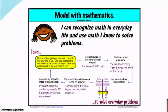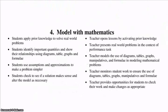Number four: model with mathematics. Mathematically proficient students can apply the mathematics they know to solve problems arising in everyday life, society, and the workplace. In early grades, this might be as simple as writing an addition equation to describe a situation. In middle grades, a student might apply proportional reasoning to plan a school event or analyze a problem in the community. By high school, a student might use geometry to solve a design problem or use a function to describe how one quantity of interest depends on another. Mathematically proficient students who can apply what they know are comfortable making assumptions and approximations to simplify a complicated situation, realizing that these may need revision later.